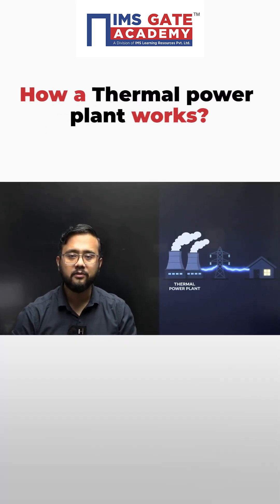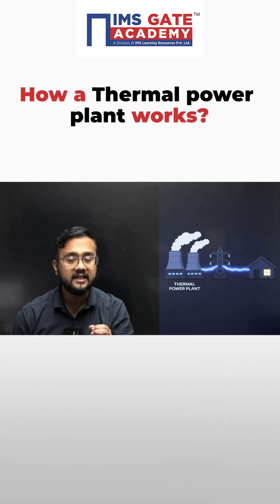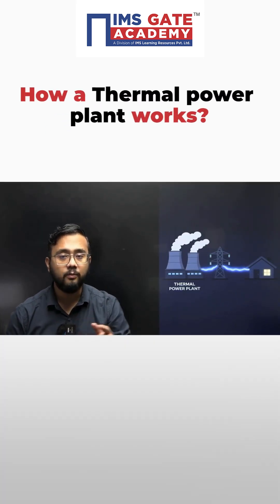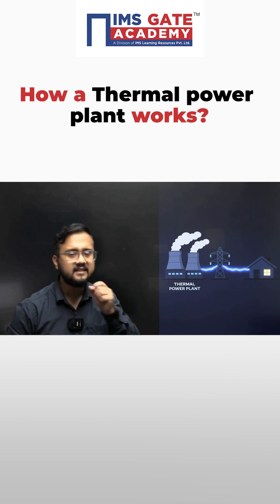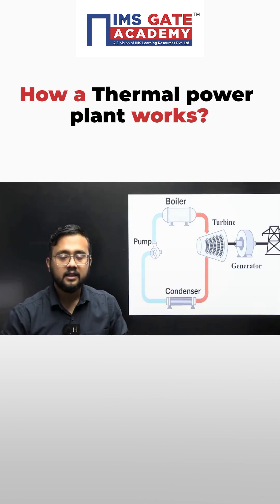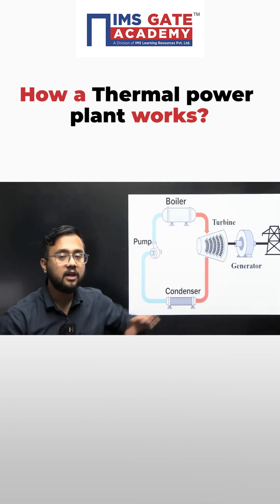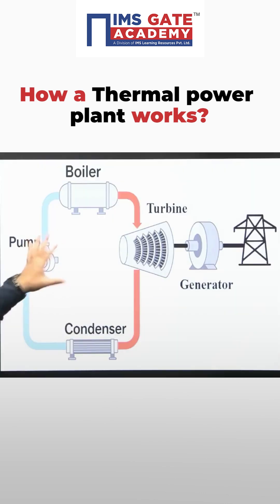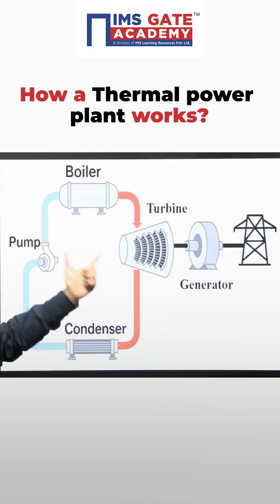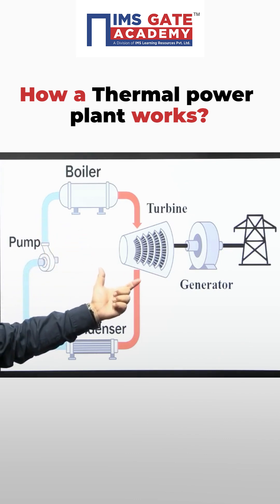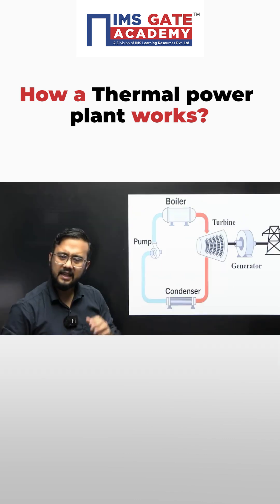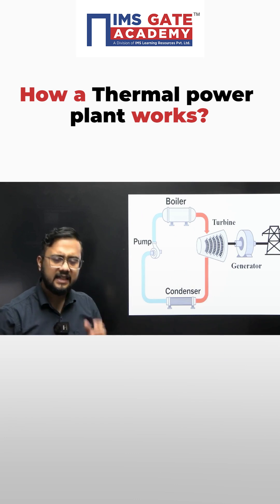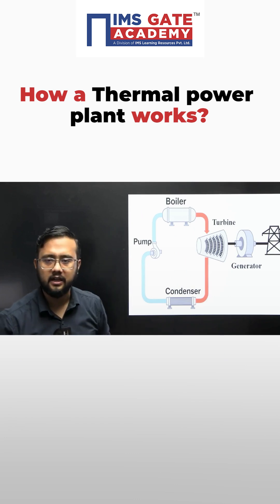Have you ever thought about how electricity reaches your home from a thermal power plant? Let us discuss this. The thermal power plant operates under a cycle which has a boiler, turbine which is further connected with a generator, then condenser and then pump. Let us discuss each of the components here.